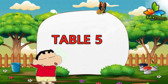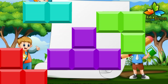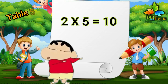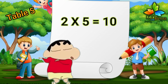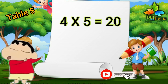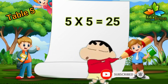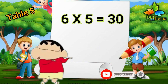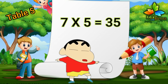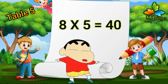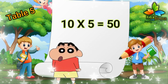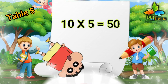Table five. One five is five. Two fives are ten. Three fives are fifteen. Four fives are twenty. Five fives are twenty-five. Six fives are thirty. Seven fives are thirty-five. Eight fives are forty. Nine fives are forty-five. Ten fives are fifty.